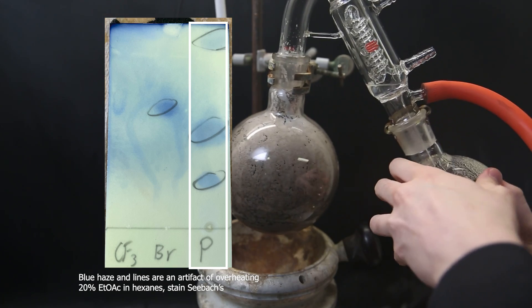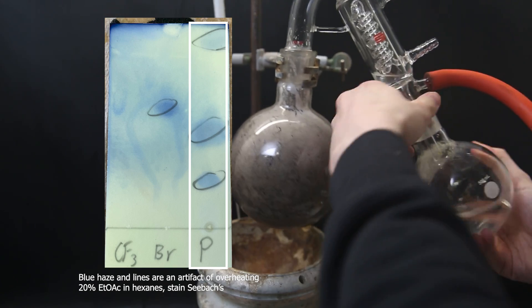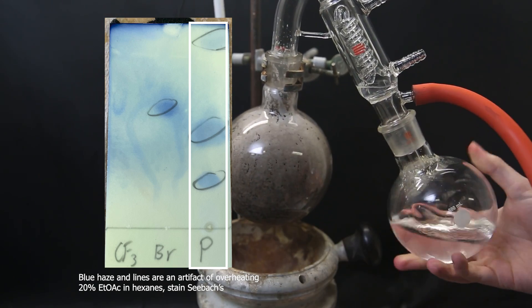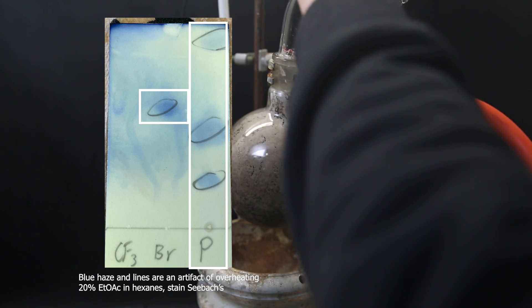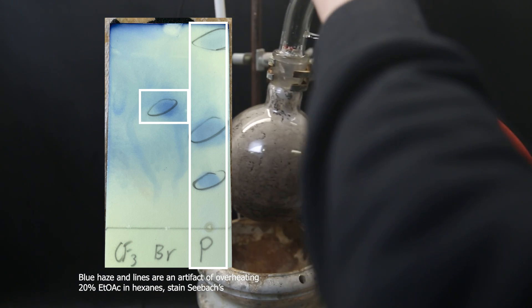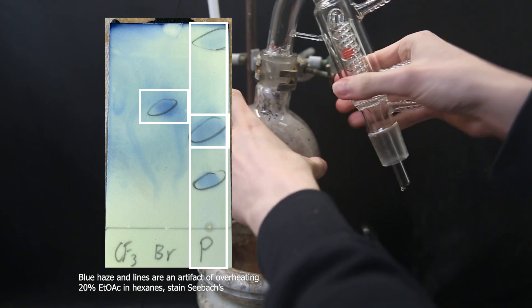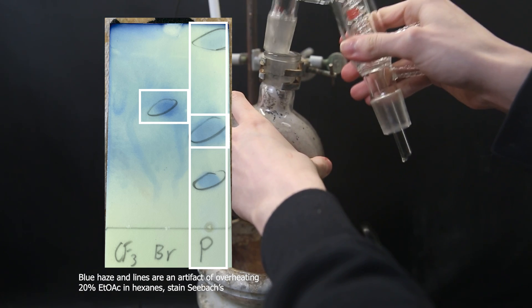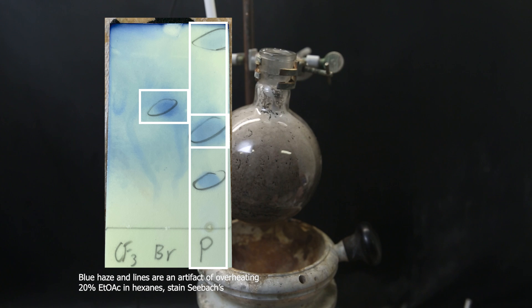Now we have three unknown spots. One is the product, and the other two are impurities. I expect the product to have similar polarity to 4-bromo benzaldehyde. So I assume that the spot closest to it is the product, which is also the biggest spot and might be an indicator that it is the major product, though it depends on how well each compound stains.